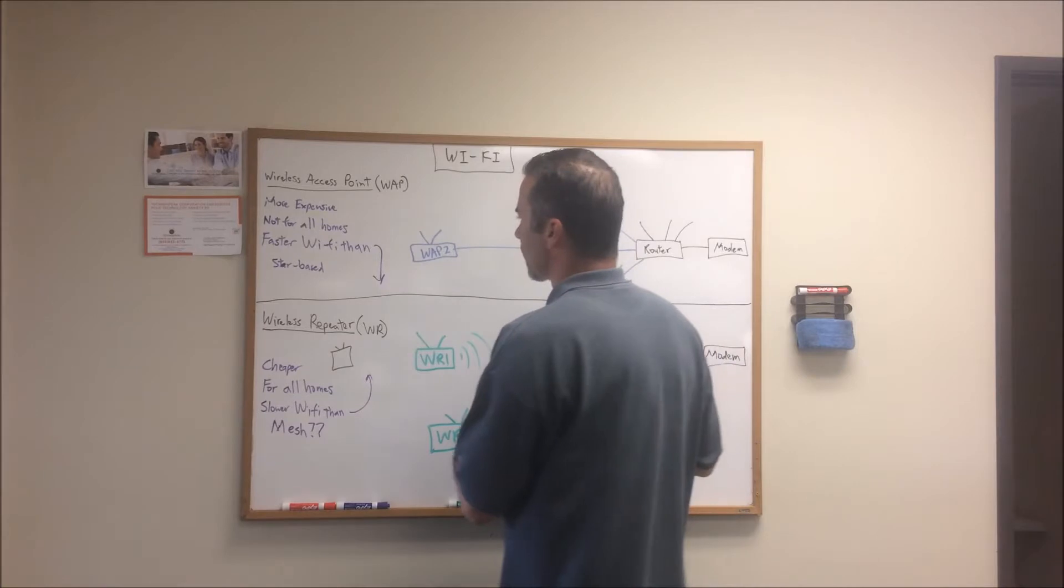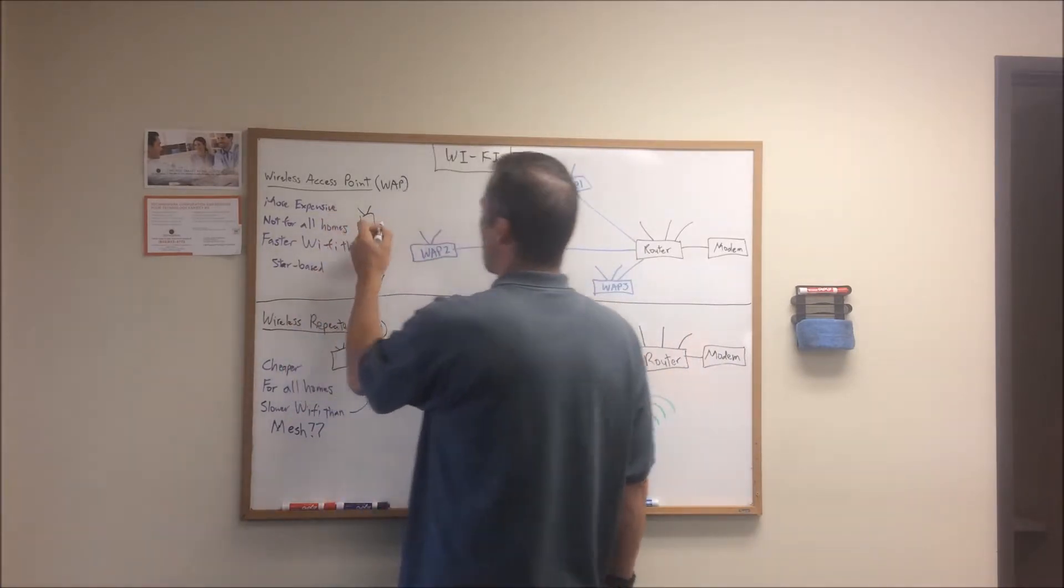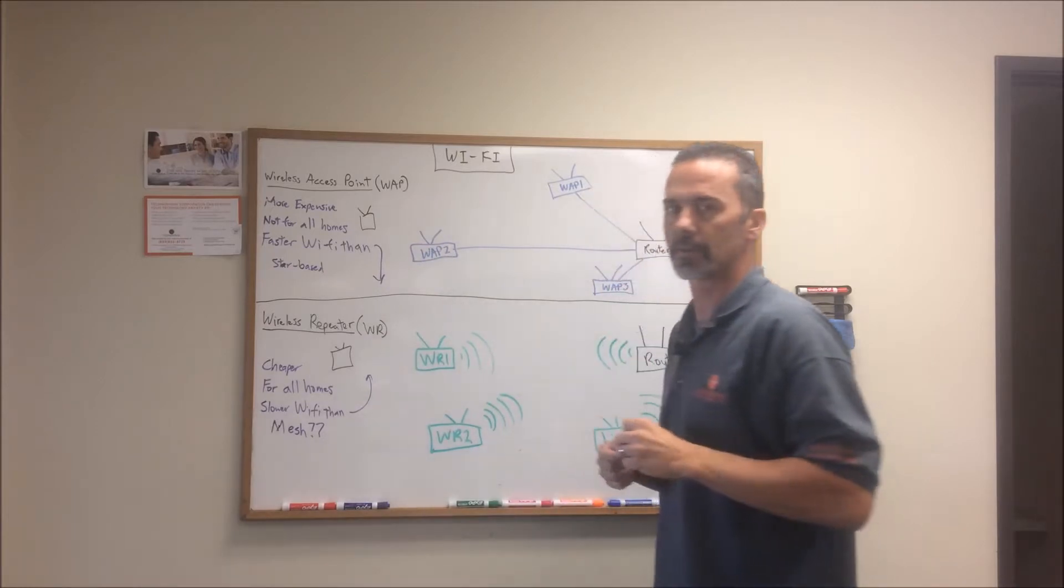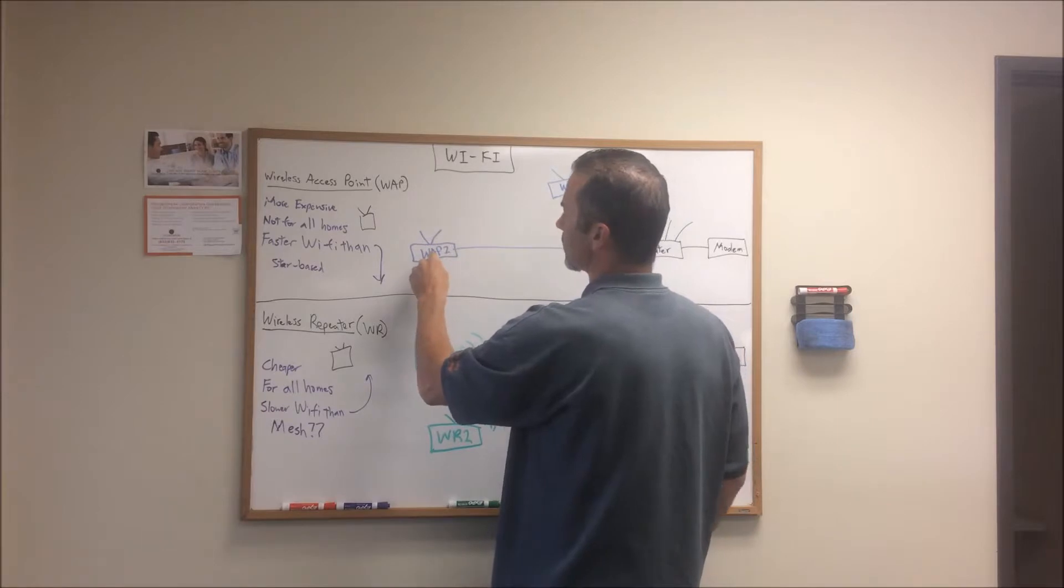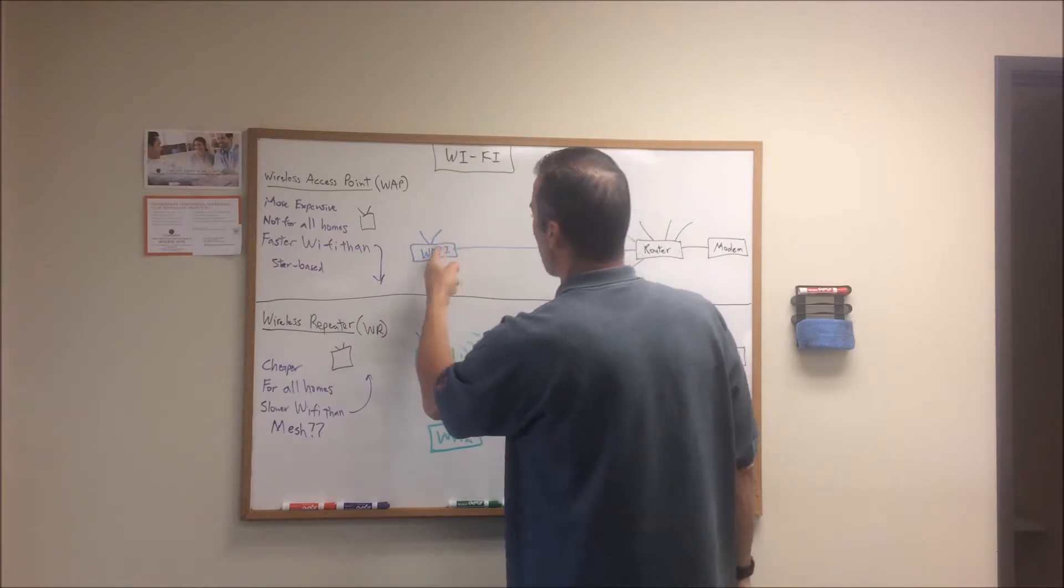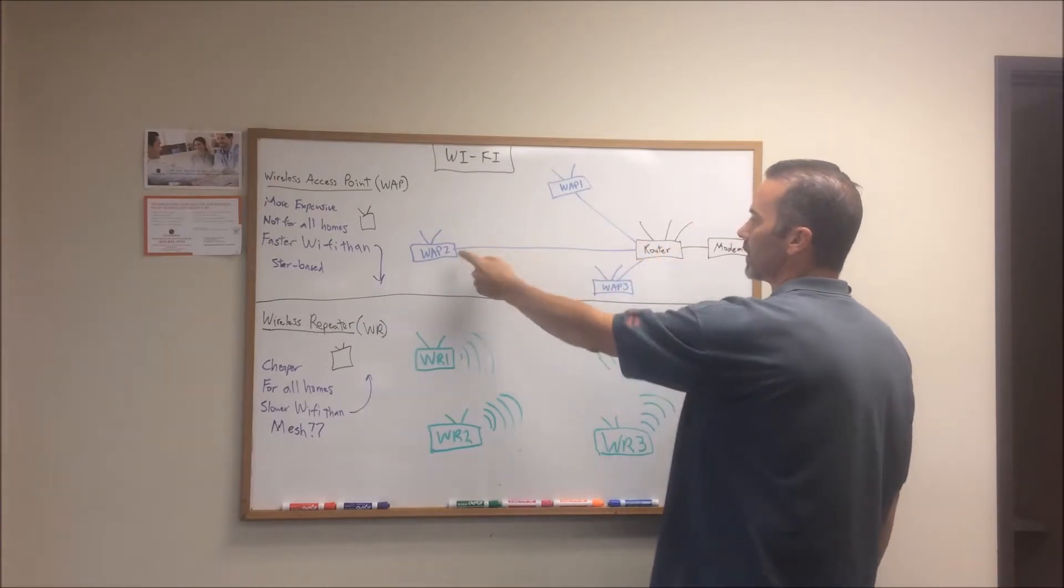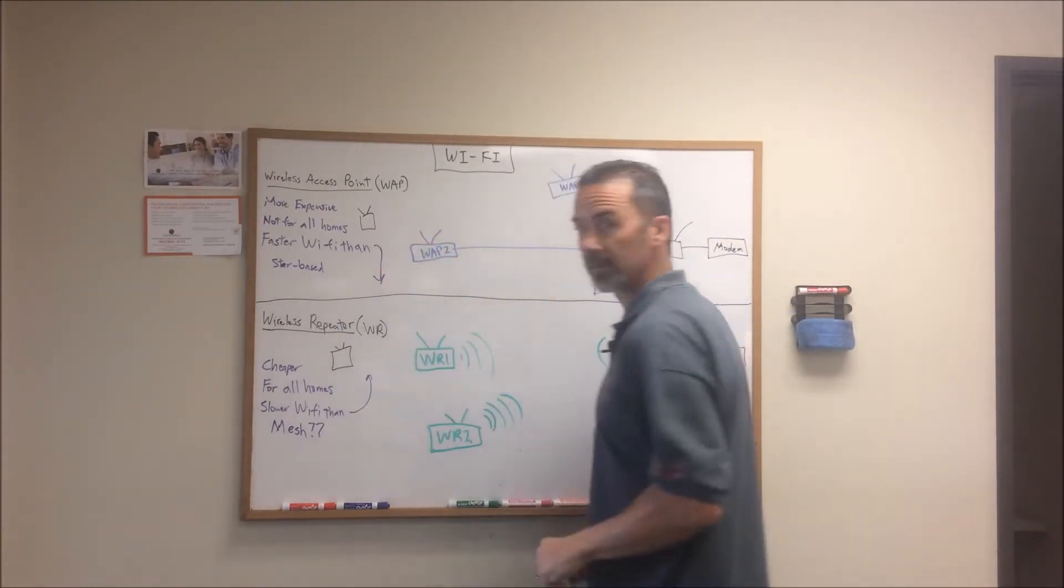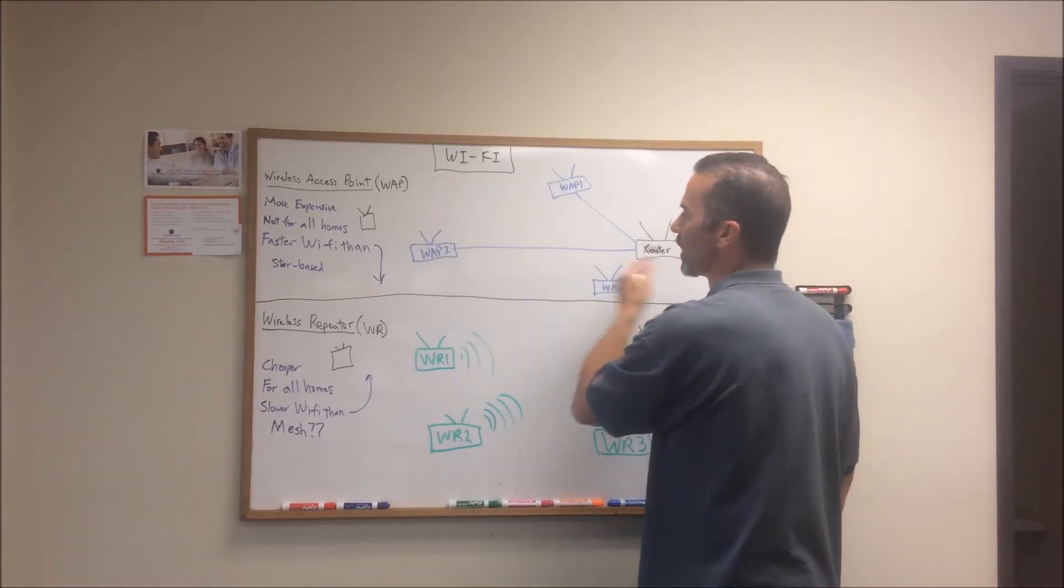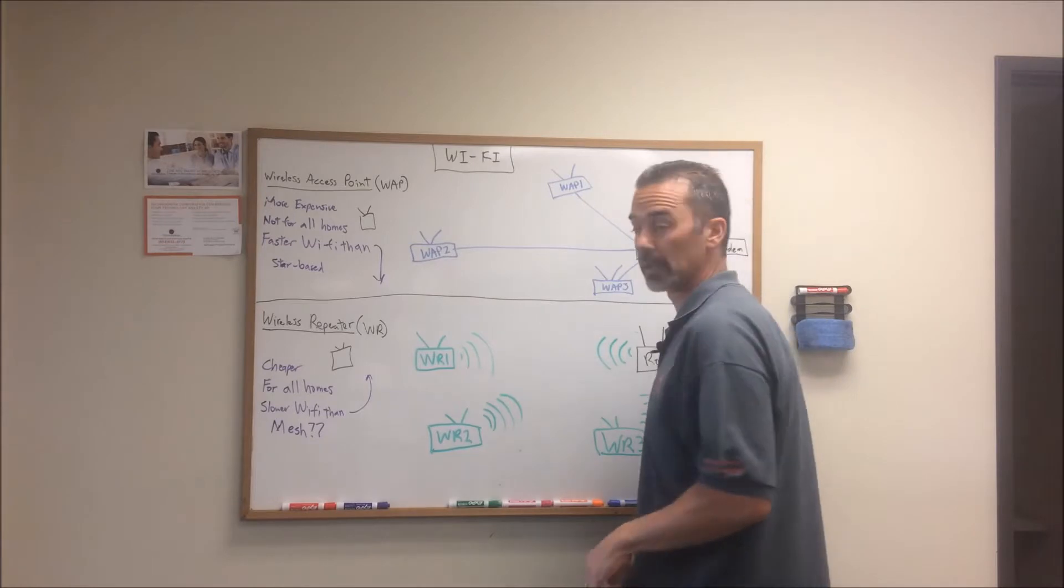And so again, if I have my iPhone 7 right here, excuse the drawing, and I want to communicate via Wi-Fi because I had a bad Wi-Fi connection before, it's now communicating to this wireless access point. But from here on out, this is all a wired data transfer back to the router and from the router back to the access point and back to the phone. So it's going to be a much faster throughput of data than a wireless repeater system would.